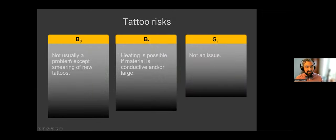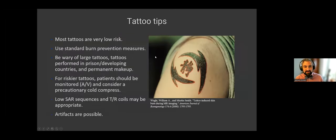Tattoos, we often get questions about tattoos. B0, static field, not usually a problem with tattoos, except I will say that within about two days after a new tattoo is put on, the B0 can actually cause a little bit of smearing. So, patients, not a hazard per se, except that patients really don't like it if you smear their tattoo. The gradient's not an issue. With tattoos, our risk is generally B1. Heating is definitely possible if the material is conductive or large. And so, most tattoos, I will say again, are very low risk. But keep using those burn prevention measures we talked about and be wary of large tattoos or tattoos from, we kind of say, low-income countries or prison or that sort of stuff. There's more likely to be conductive material. And consider making sure that the patient is conscious and applying a cold compress to it if you're worried about it.